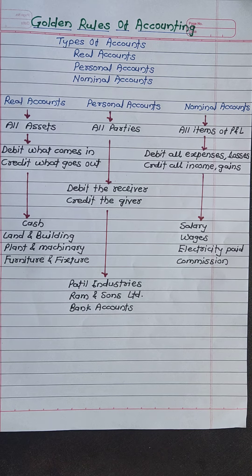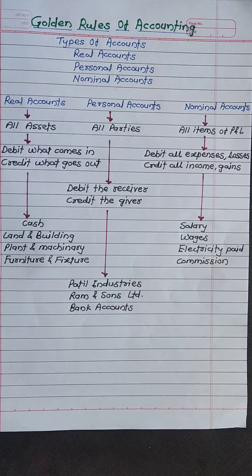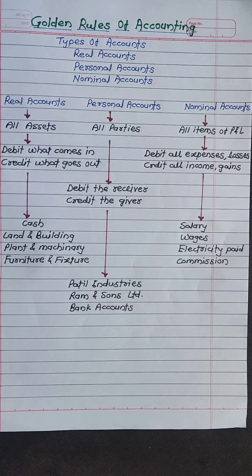Hello everyone. Today we will discuss about golden rules of accounting. Golden rules of accounting are the basics in accounting and for accounts interviews — the interviewer might start the interview with golden rules of accounting. To learn golden rules of accounting, first we need to learn types of accounts. As we can see on the screen, there are three types of accounts: Real Account, Personal Account, and Nominal Account. Now we will discuss each account separately.